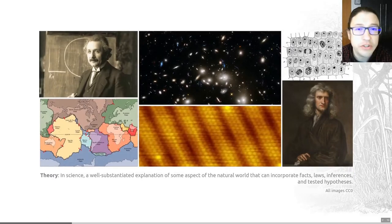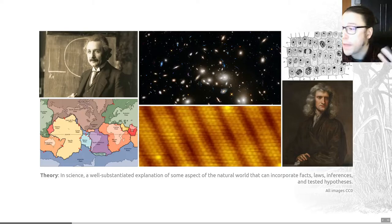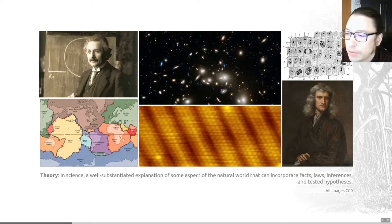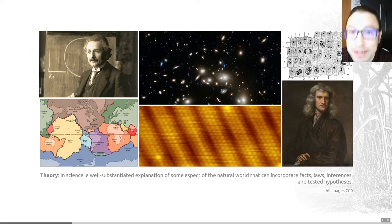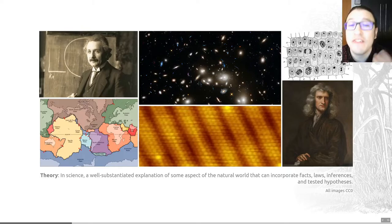And if we wanted to define a theory within a scientific context we need all three of those definitions. So thinking back to those we can say that in science a theory is a well-substantiated explanation of some aspect of the natural world that can incorporate facts, laws, inference and tested hypotheses. So all of those things feed in to this idea of a theory or this definition of a theory.